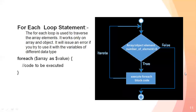Then there is the foreach loop statement. The foreach loop is used to traverse array elements. It works only on arrays and objects. It will issue an error if you try to use it with variables of a different data type.